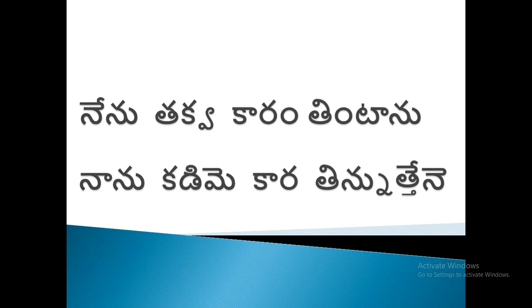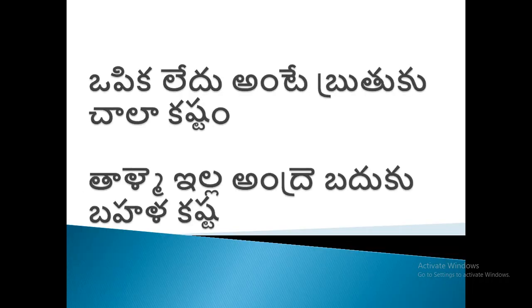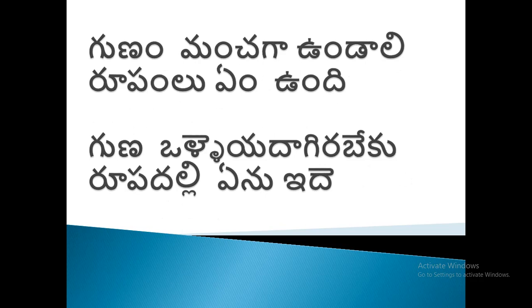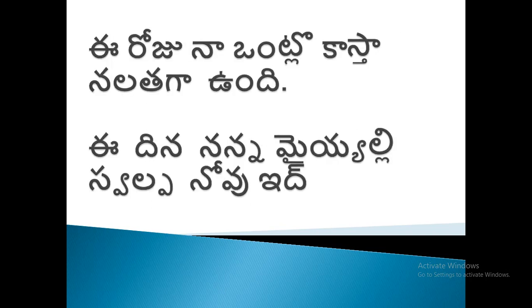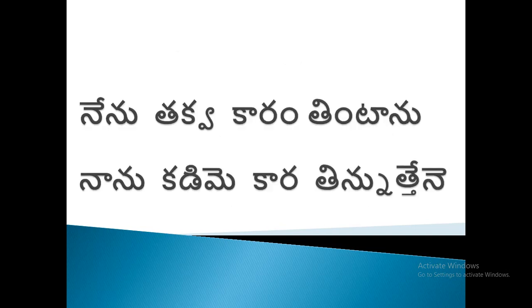નેનુ નાનુ તકવા કડિમે, કારા કારં તિનુ, તેને અંડી. ઈંકો સારે ગલાં શ્તા ઉપિક લેદુ, તાળમે તાલા કસ્ટમ. બધુકુ બહળા કાષટા, ગુણમ મંચગા ઉંડાલી, ગુણા ઉળ્ળે દાયરબેકુ, રૂપમલો એમ ઉંદી, સ્લપ નલાતગા ઉંદી.